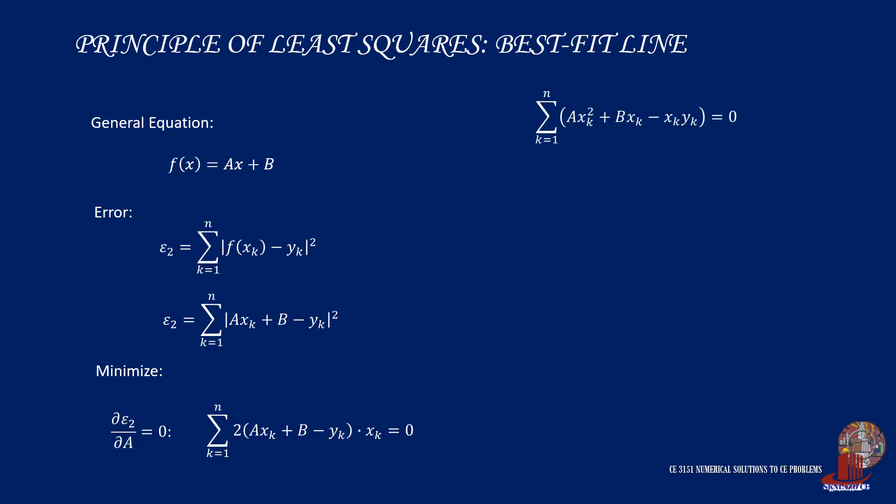If x sub k is distributed among terms in the parenthesis, we arrive at the summation of the parenthesis a times x sub k squared plus b times x sub k minus x sub k y sub k is equal to 0.